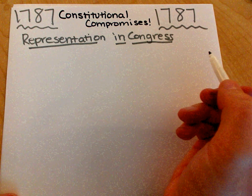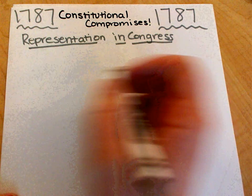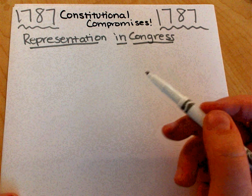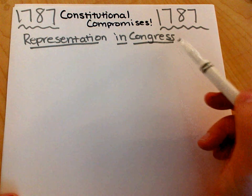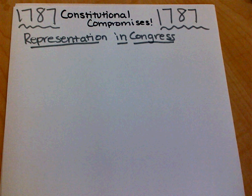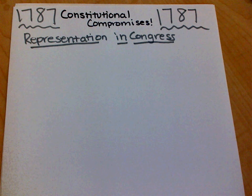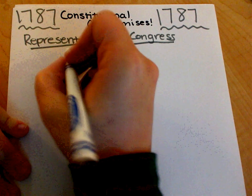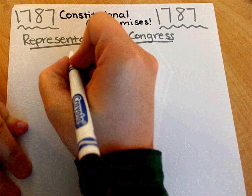This review video covers constitutional compromises, starting with representation in Congress. How will people be counted? Congress is where they make the laws. How are people going to be counted when they make those laws? The first thing we're going to talk about are two plans for how states are going to be represented.